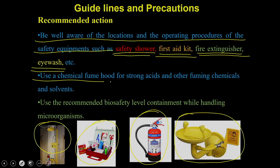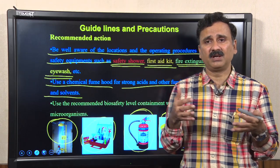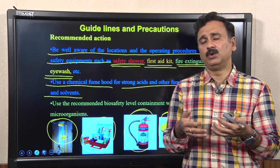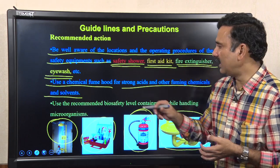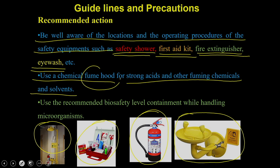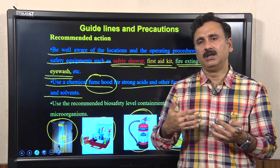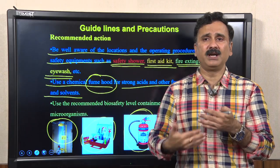You have to use a chemical hood for strong acids and other fuming chemicals and solvents. Most chemistry labs use strong acids, strong bases, or evaporatory chemicals such as organic solvents. In all such cases you have to use a fume hood, because the fume hood sucks out all the fumes so the person using them will not get exposed.